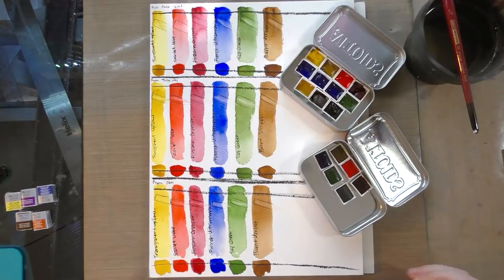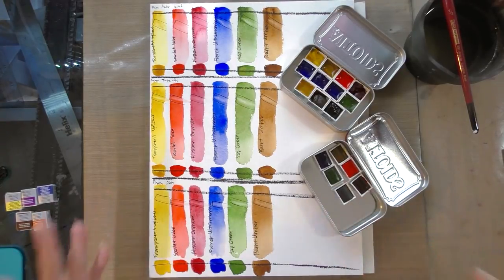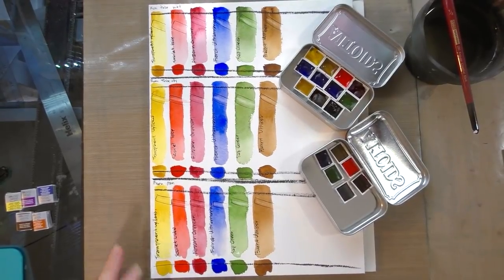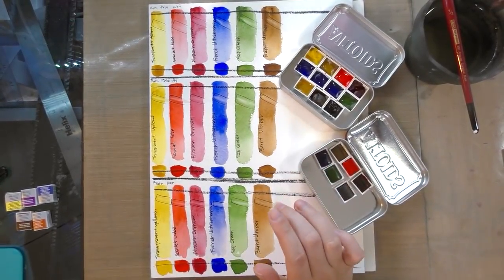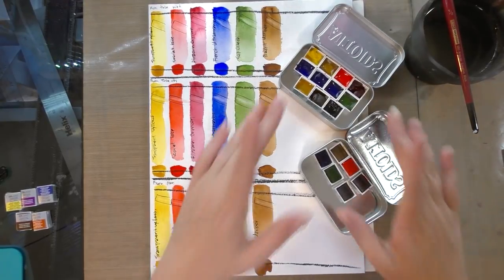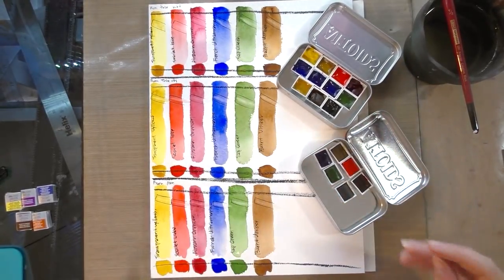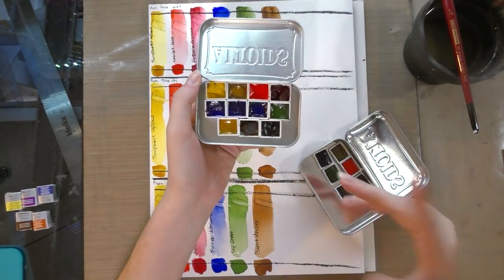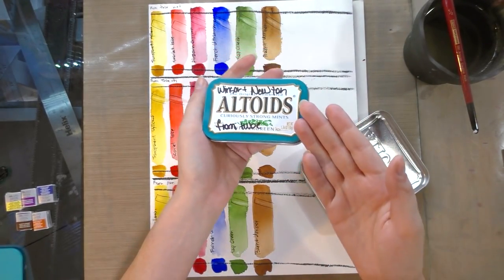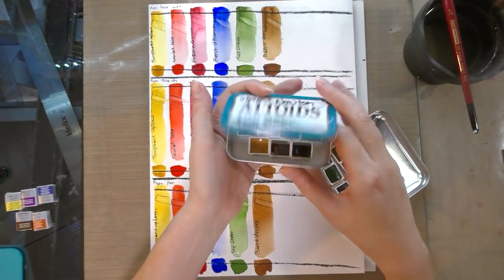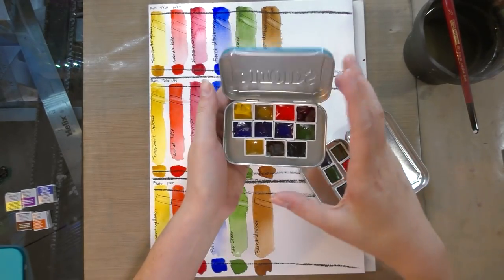As of this recording, I feel like you're getting a better deal by buying tubes and filling them yourself. I mean, you can get inexpensive empty half pans on Amazon. I can link that in the description below and you can just store it in an Altoids tin. You really don't need anything fancy. You can also buy empty tins on Amazon as well.